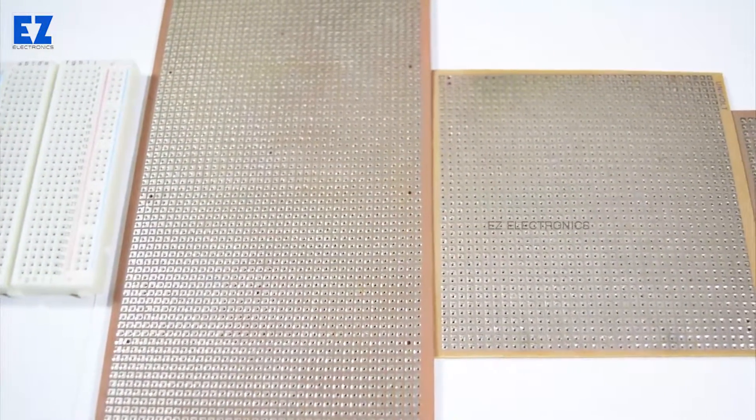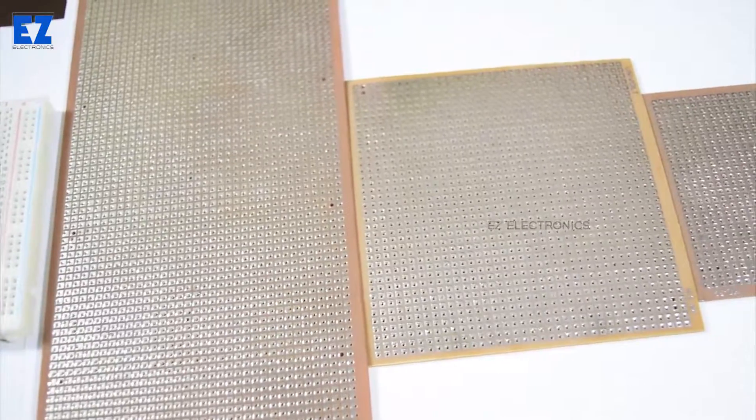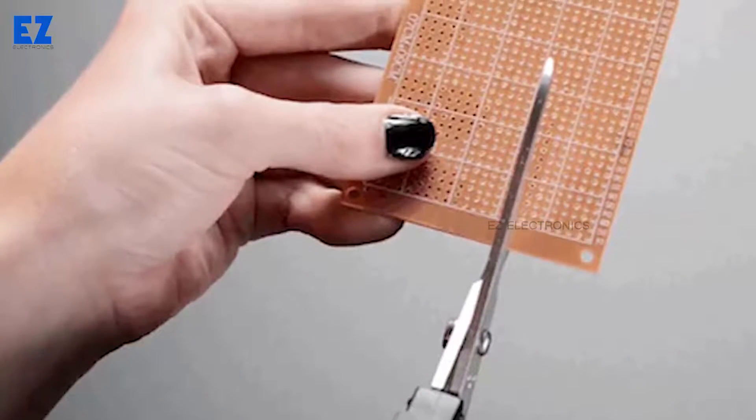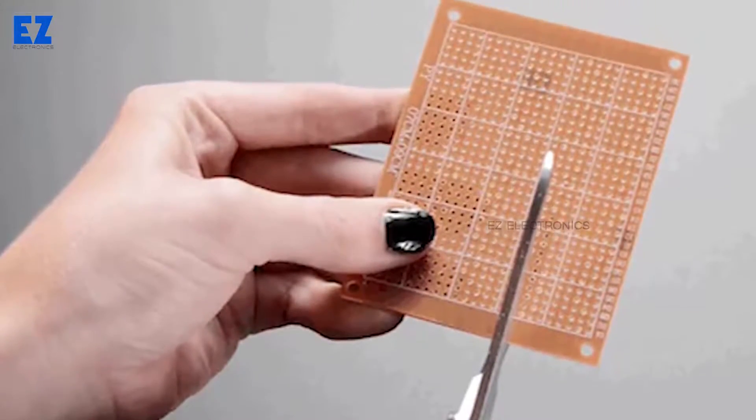The most common sizes range from small that is 2x1.5 inch to big that is 8x4 inch perfboard. A large perfboard can be cut to get a smaller size of perfboard. I hope you have learnt about perfboards from this video.